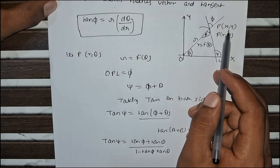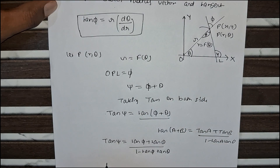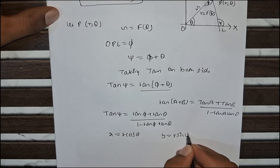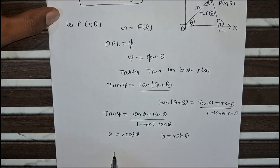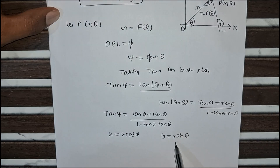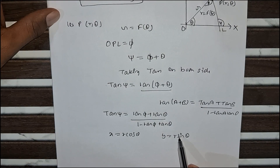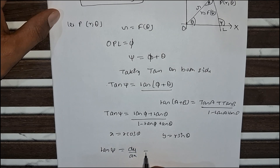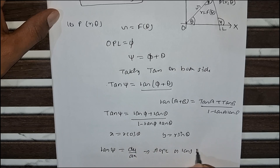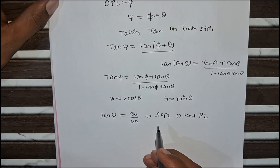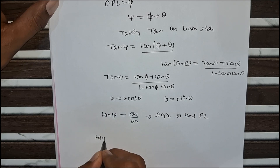So we can write tan ψ equals (tan φ + tan θ) divided by (1 minus tan φ · tan θ). Here x and y are the Cartesian coordinates of P, where x equals r cosθ and y equals r sinθ. The geometric meaning of the derivative tan ψ equals dy/dx, which is the slope of the tangent PL.